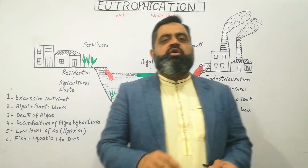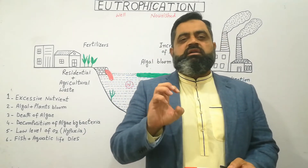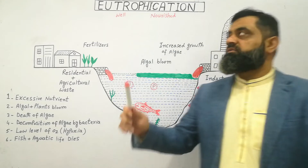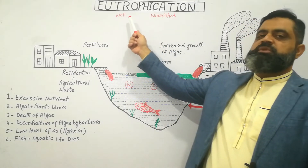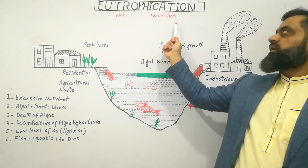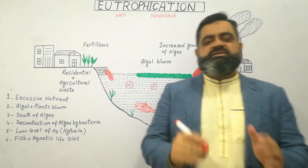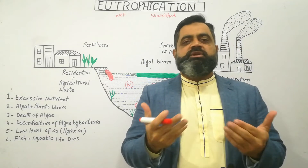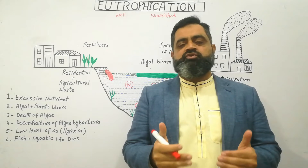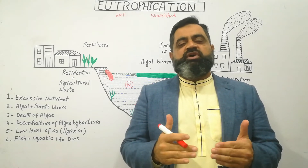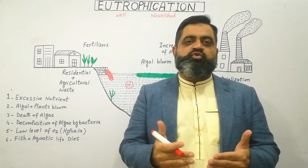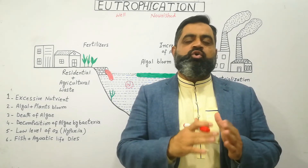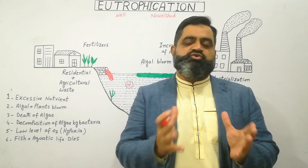First of all we are going to look at the literal meaning of eutrophication. The word eutrophication means 'nourished.' It is a system in which a water body — which could be a lake, a river, or an ocean — is well nourished. Too many nutrients are added into our water body and the whole ecosystem is destroyed.